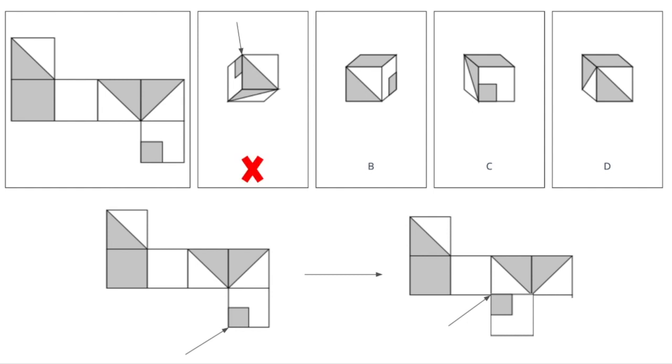We can also very quickly eliminate answer choice C because we have the same corner here and like we saw, this corner meets with the unshaded triangle. So in this answer choice again, there is a shaded triangle that meets in this corner so we can eliminate C as well. So now we are left with B and D.